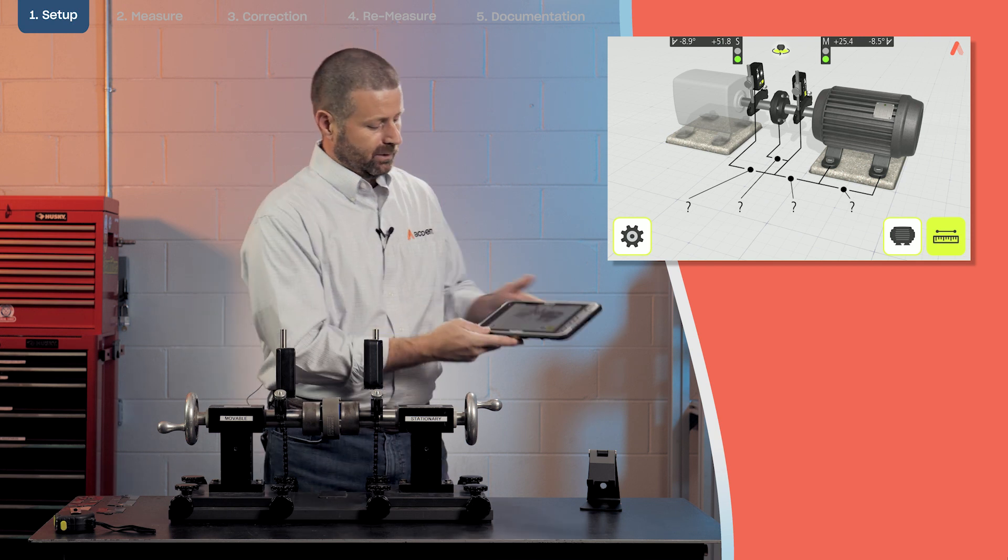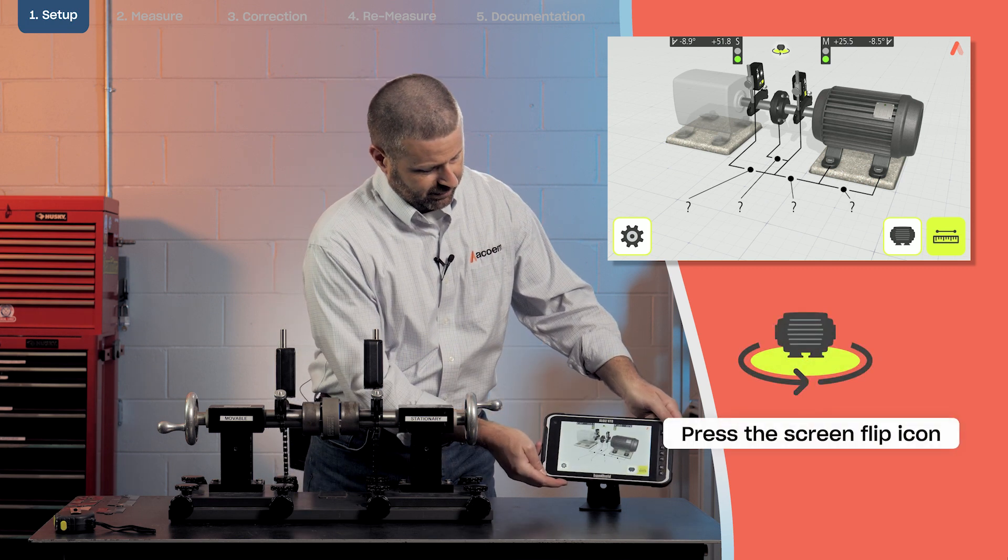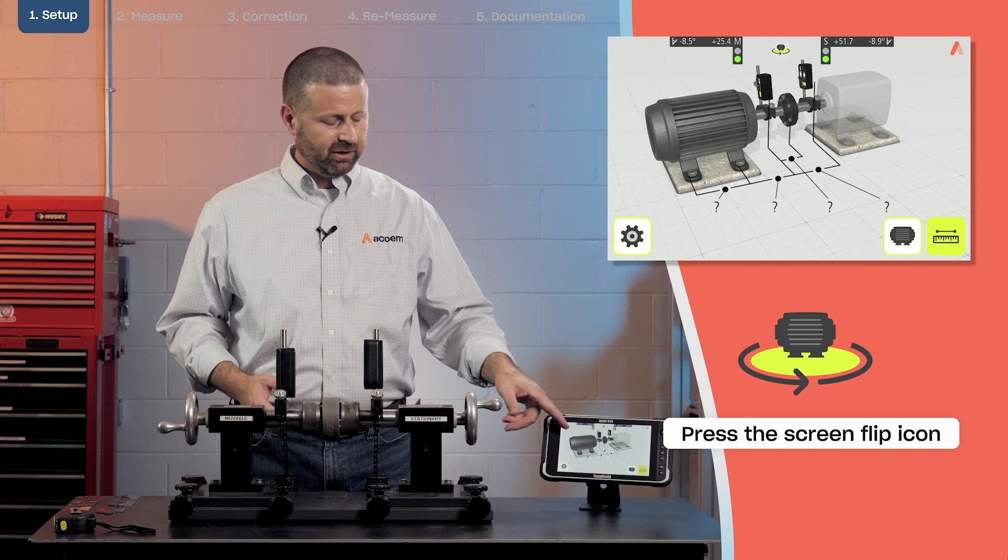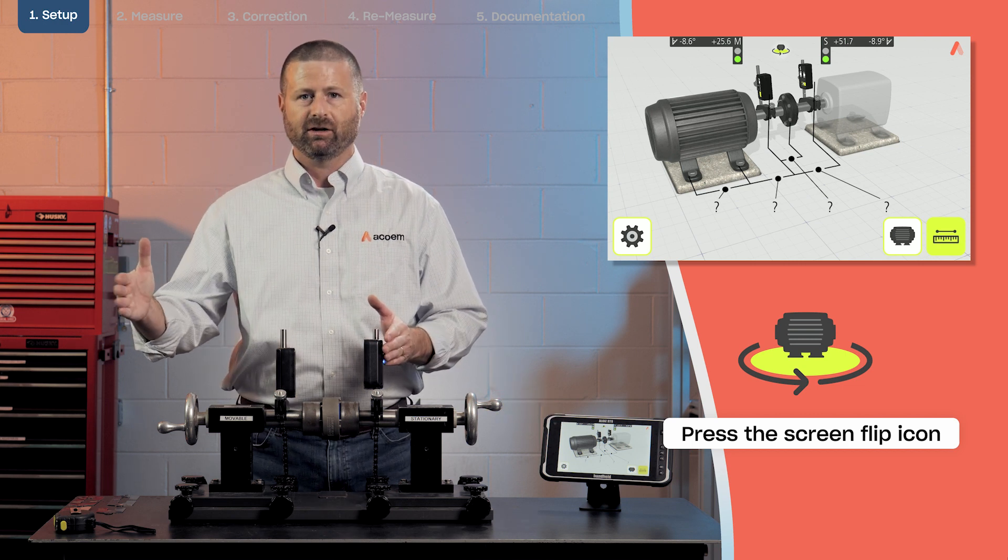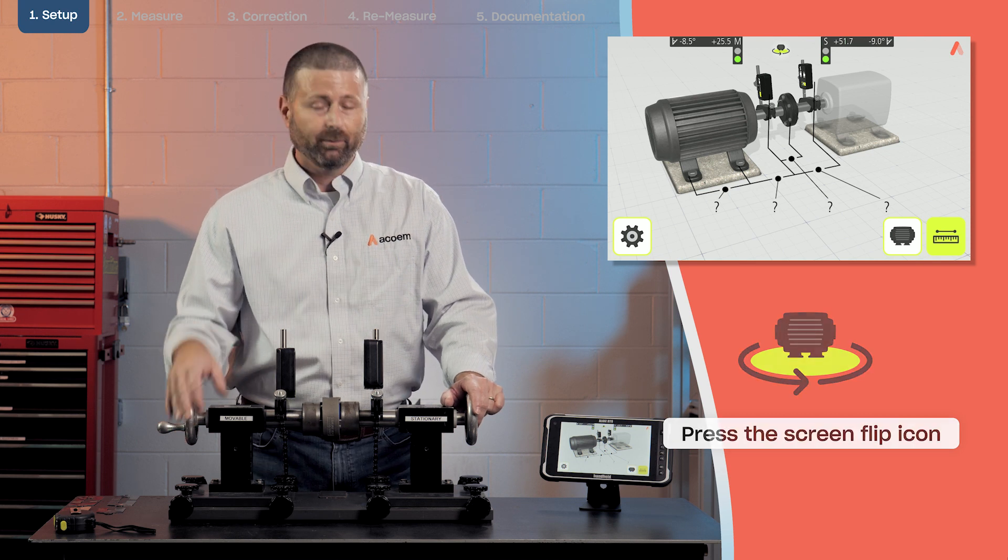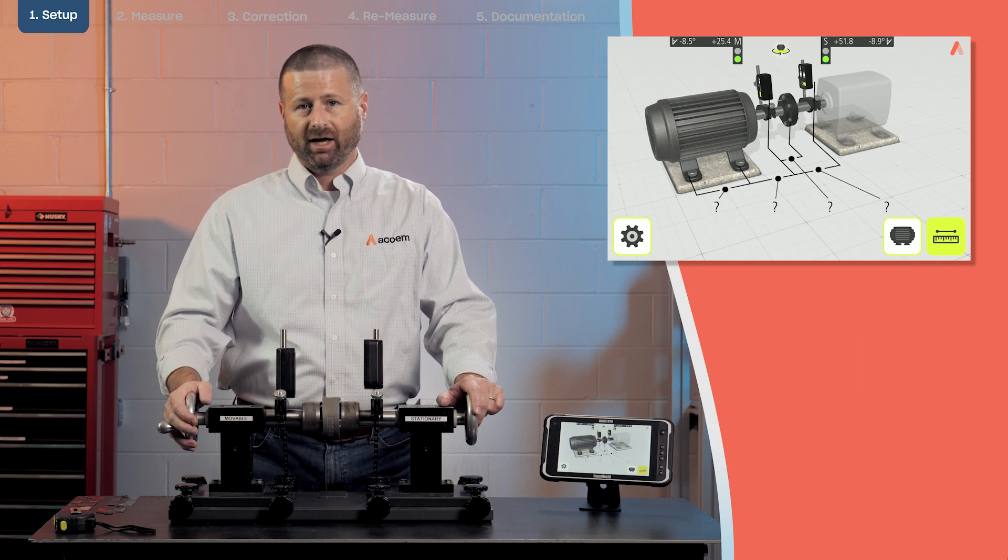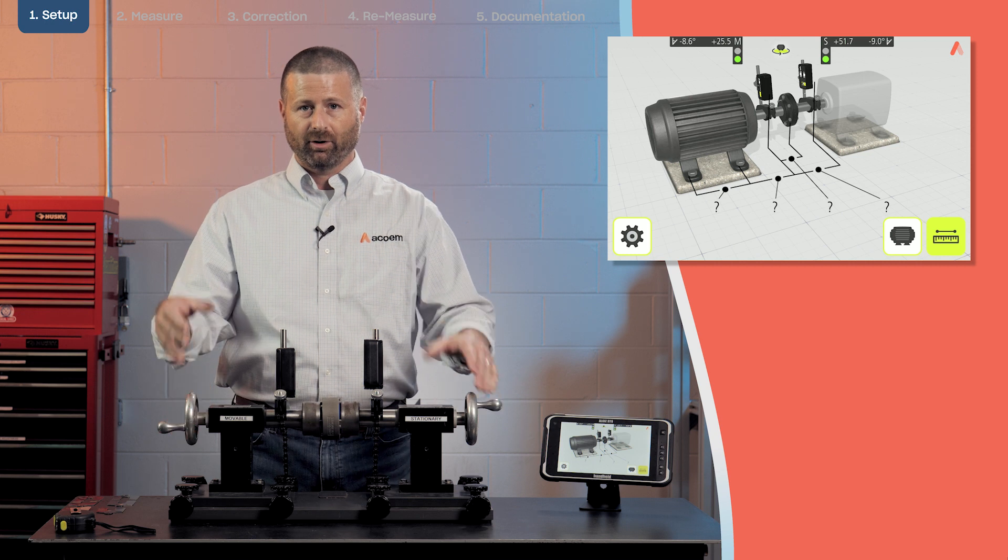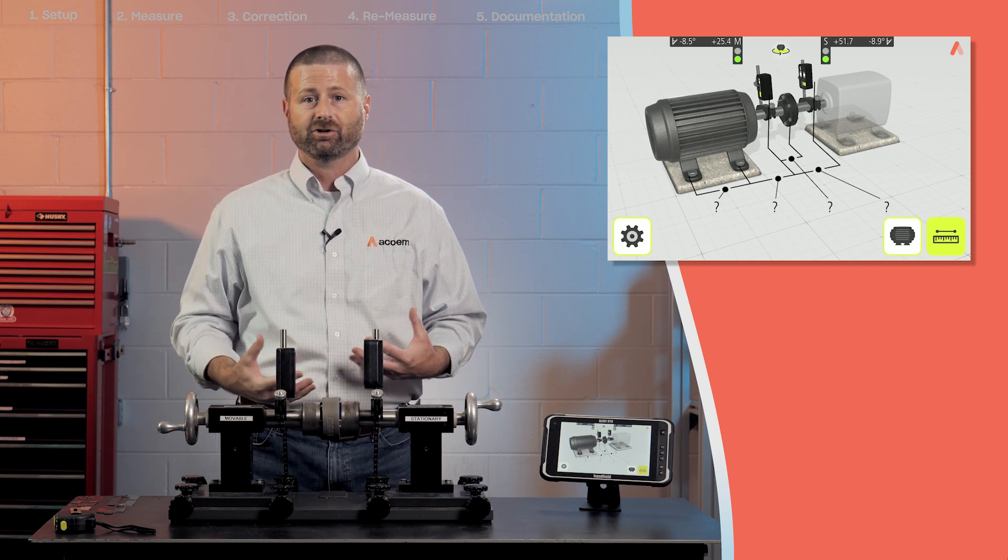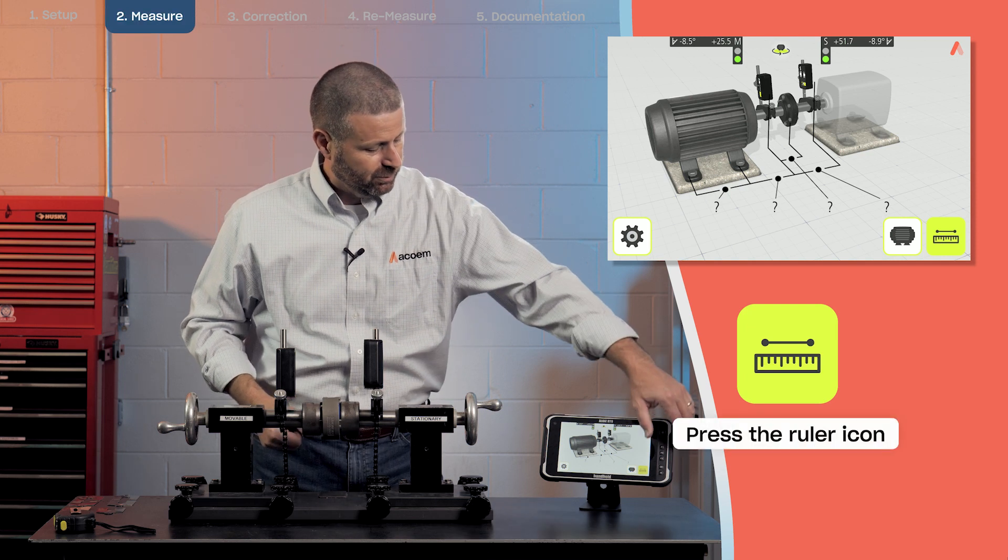What I'm going to do for the sake of the camera is reorient the picture so that the motor or the movable machine is oriented for the camera side of the demonstrator. This actually comes in handy during the alignment process as you tend to move around the machine from one side to the other, the picture can be reoriented to where you stand.